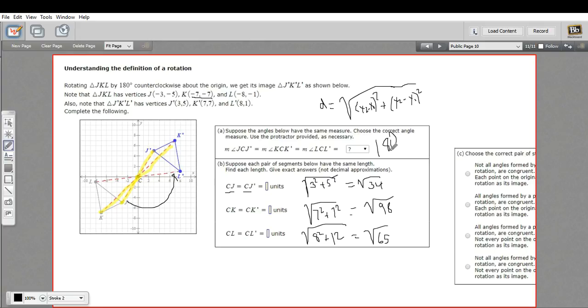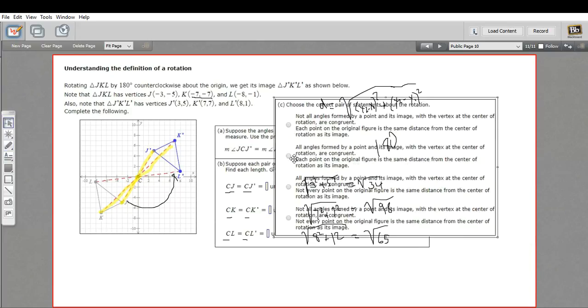Okay. So we've determined that this angle is the same as the angle of rotation. And we've seen that each of the halves of these sort of lines between the point and its image are the same length. So let's take a look at these questions now.